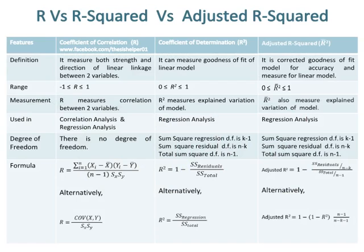The definition of the coefficient of correlation is that it measures both the strength and direction of linear linkage between two variables. The definition of the coefficient of determination is that it measures goodness of fit of a linear model. The definition of adjusted R-squared is that it is a corrected goodness of fit measure for accuracy of a linear model.